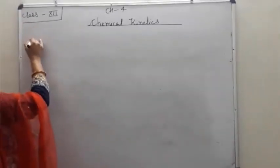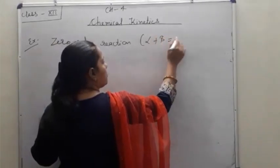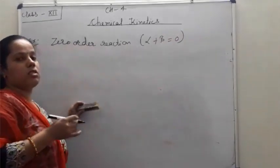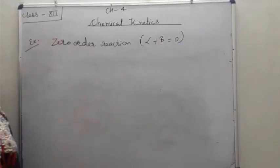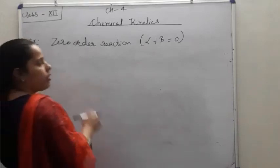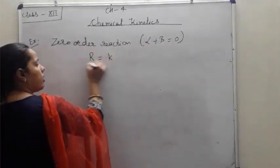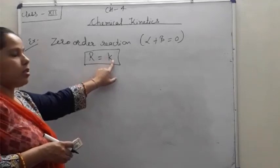First example: zero order reaction. Zero order reaction means alpha plus beta equals zero — i.e., the rate of reaction does not depend upon the concentration of the reactant. The rate will only equal the rate constant K. For example, H2 + Cl2 → 2HCl. Experimentally, it is found that the rate of this reaction is independent of the concentration of hydrogen and chlorine. So R = K. This is a zero order reaction.